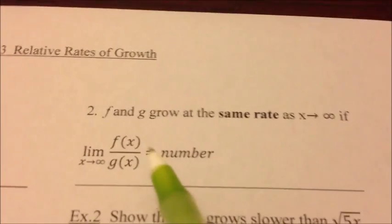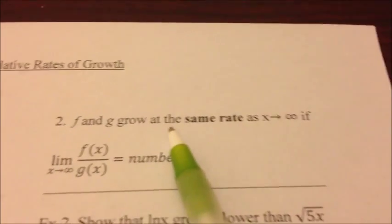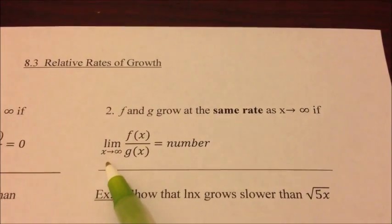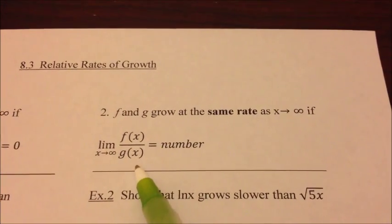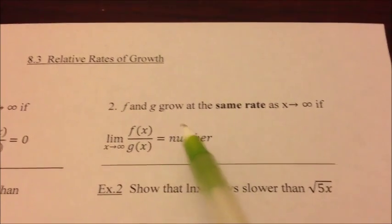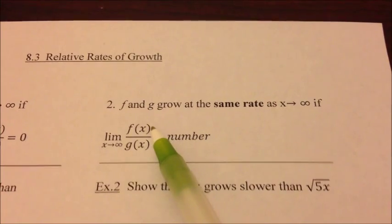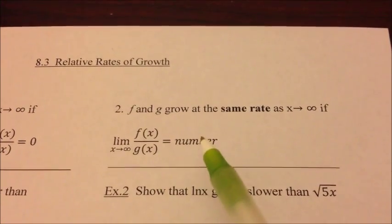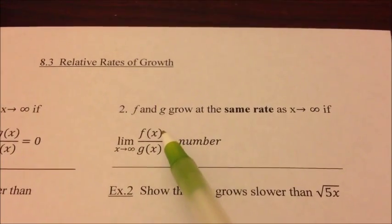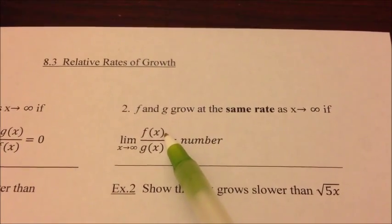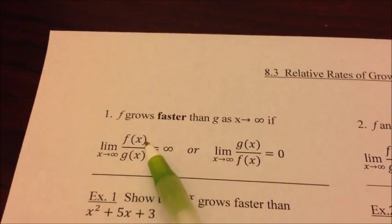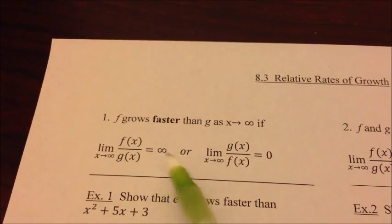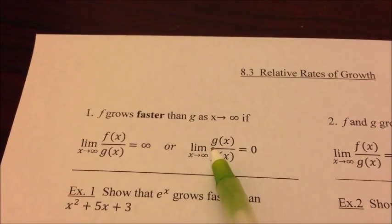The other rule: f and g grow at the same rate as x approaches infinity if the limit as x approaches infinity of f(x) over g(x) equals a finite number. It doesn't matter if g(x) or f(x) is on top, as long as it equals a number. I usually get in the habit of using f(x) as the numerator so I know I'm always looking for infinity and don't have to confuse myself.